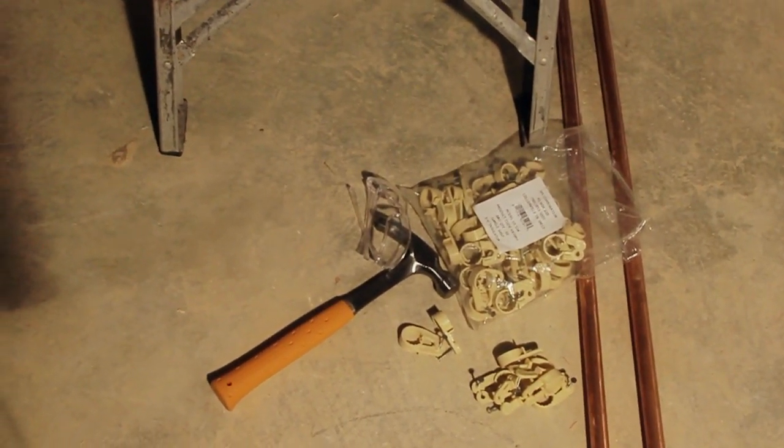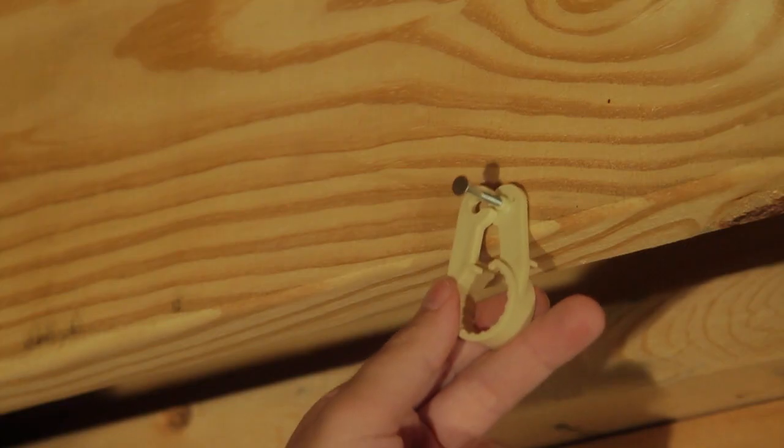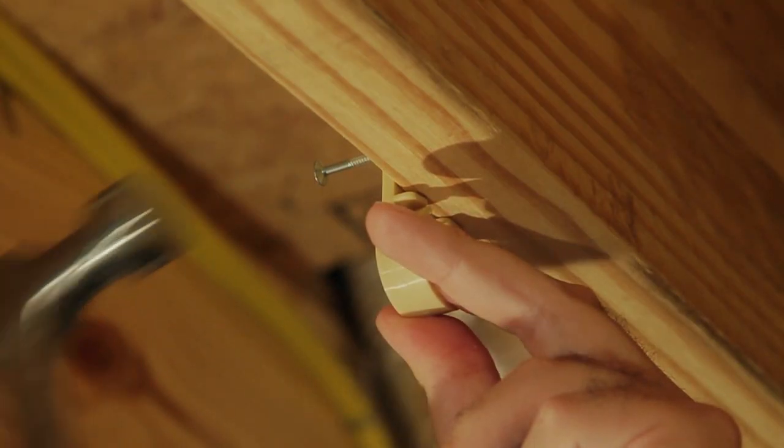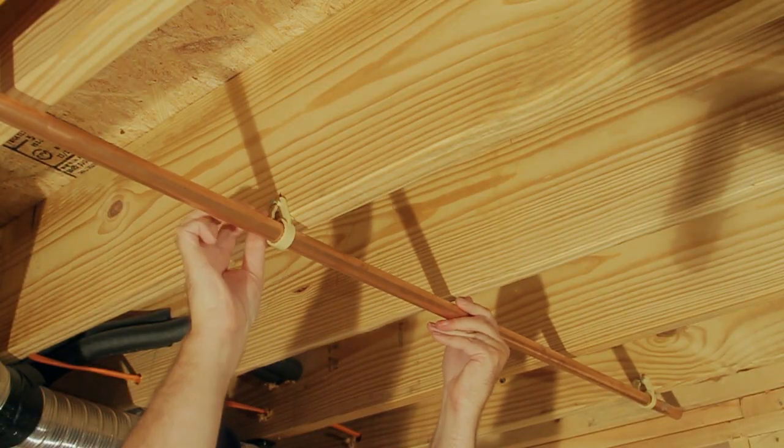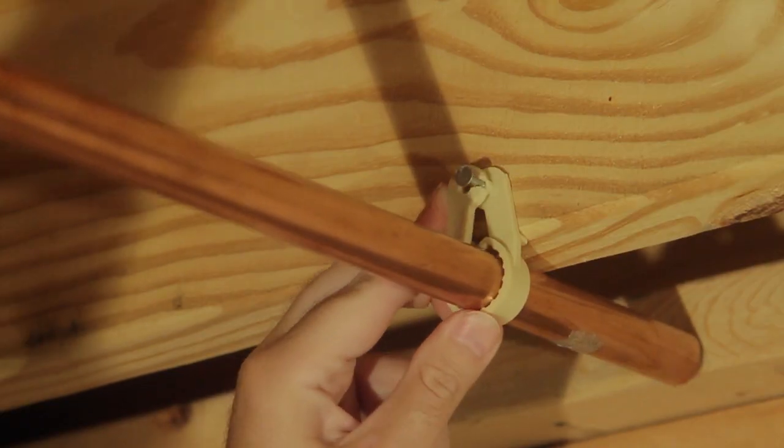Here's how easy the Single Shot is to install: Position the clamp abutting the joist, preset the nail to the joist with clamp open, slide the pipe into the Single Shot, and snap the clamp closed. Set the nail into the joist.